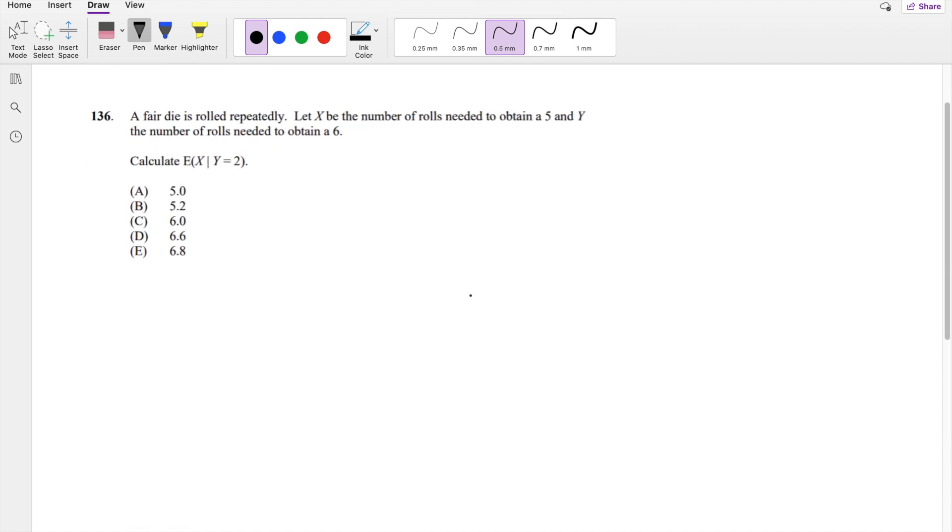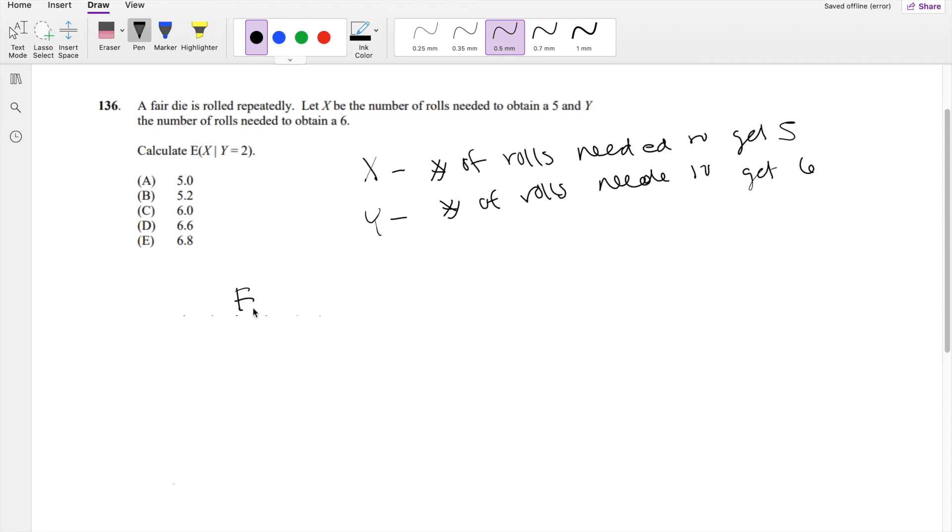So this question is saying, I'm going to denote X right here. They denote X to be the number of rolls needed to get 5. And Y is denoted as the number of rolls needed to get 6. So they're saying, find the expected value of X given the number of rolls needed to get a 6 is 2. So however many rolls, the second roll has to be a 6, right? So then not 6 would be this area right here and then anything above 3. Agreed? Okay.